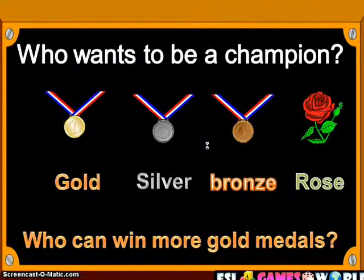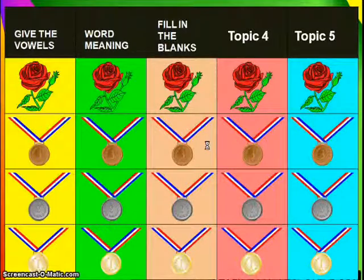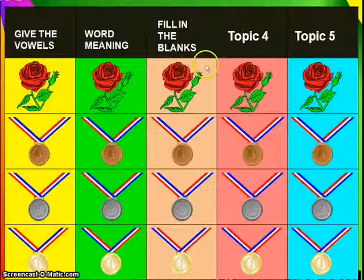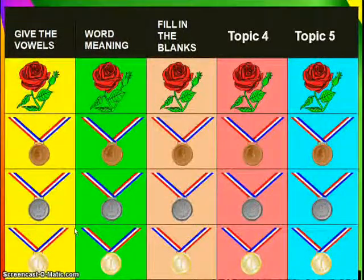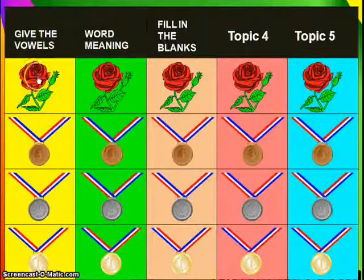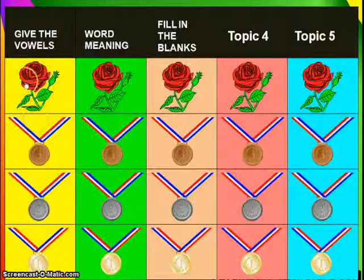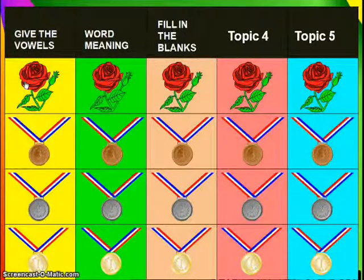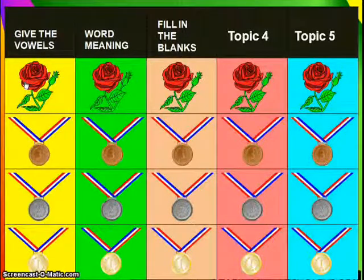Click anywhere to proceed to the next slide. As you can see here, there are different topics: Give the Vowels, Word Meaning, and Fill in the Blanks. We have to ask the student which category he or she wants to answer. For example, if he chooses Give the Vowels, the student must answer all the questions inside the rose, the bronze, the silver, and the gold medal. The prize depends on how many correct answers the student got. For example, if the student only got three correct answers, he can only get the silver medal. But if he doesn't have any correct answers, he still wins a rose.